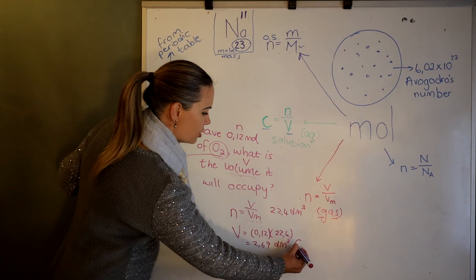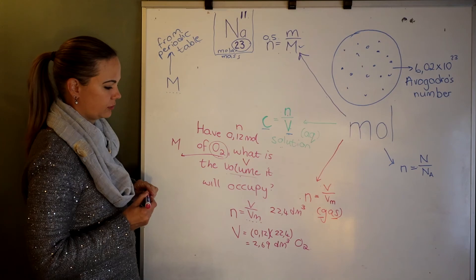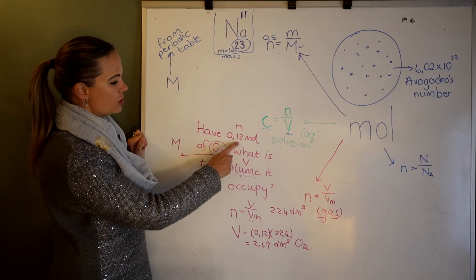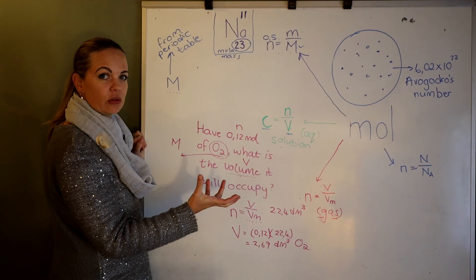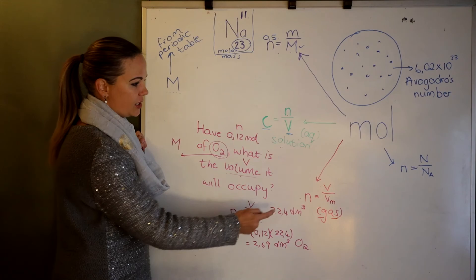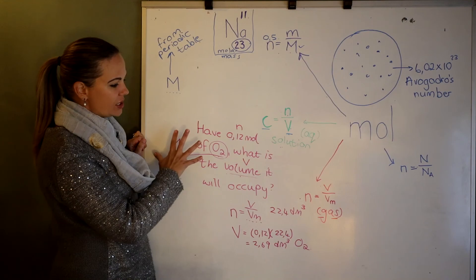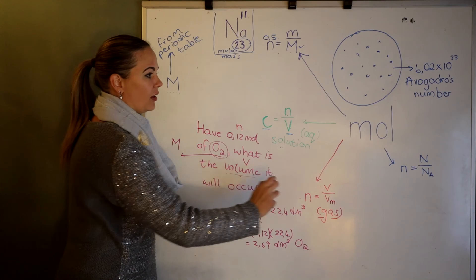Because we have the moles, we can also calculate the mass of the oxygen molecules that will occupy a volume of 2.69 cubic decimetres. Always look at what you have and what is being asked. In a following video, I'll cover a calculation regarding the number of moles, individual particles, and Avogadro's number.